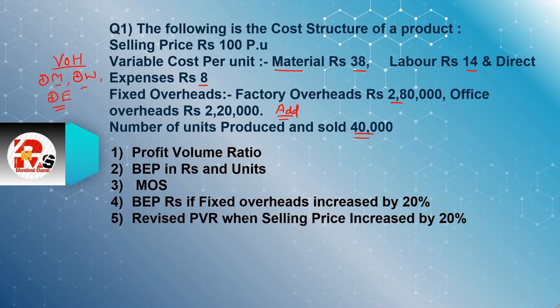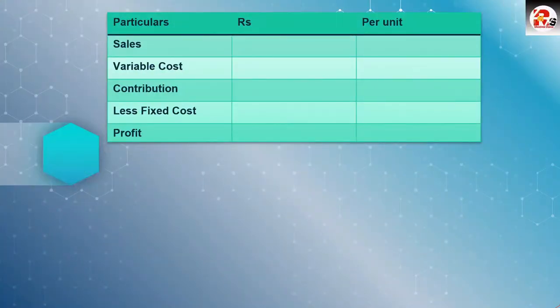We need to calculate: profit volume ratio (PVR), BEP in rupees and units, MOS, BEP in rupees if fixed cost increases by 20%, and revised PVR if selling price increases by 20%. The first thing is formatting — I have told you in the first lecture that our format is very important.